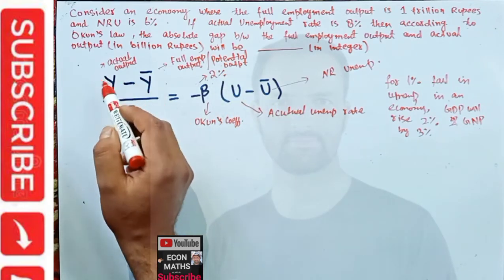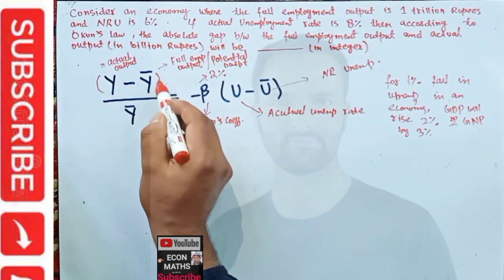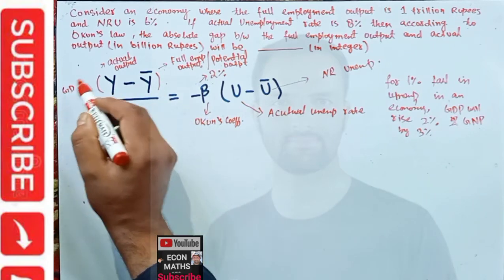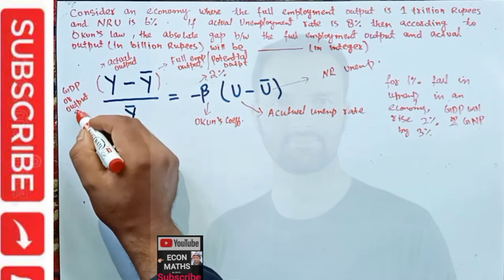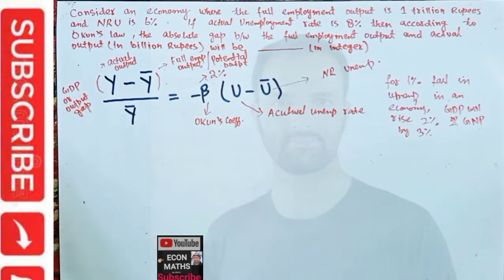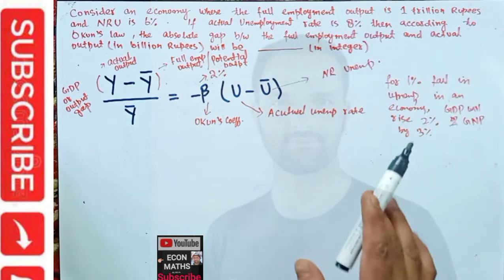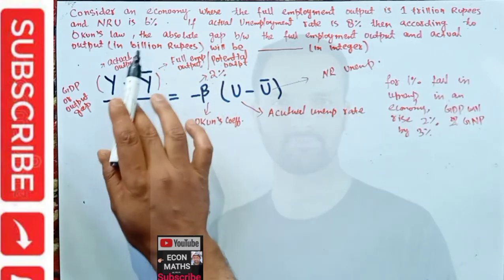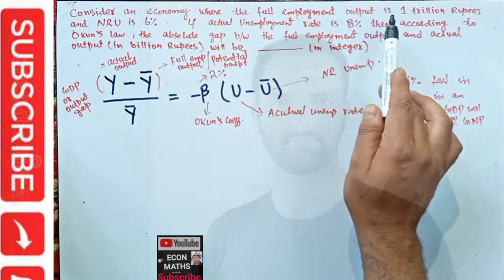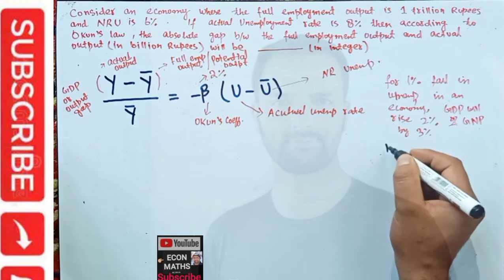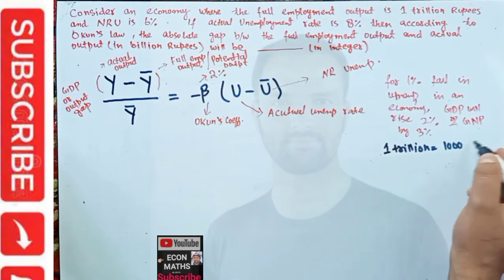Coming to the question: the full employment output is 1 trillion rupees, but we have to give the answer in billions. One trillion equals one thousand billion, so we write the full employment output as 1000 billion.